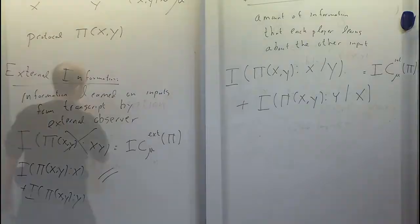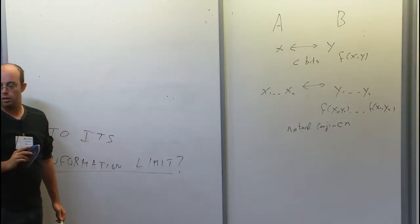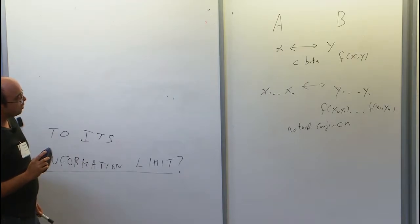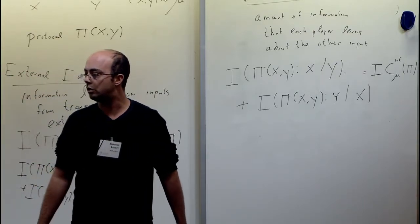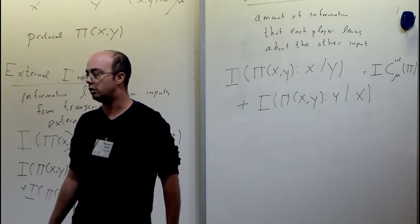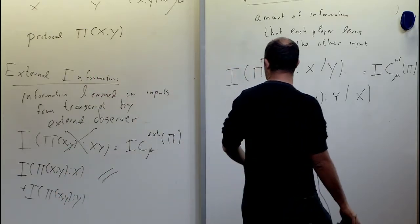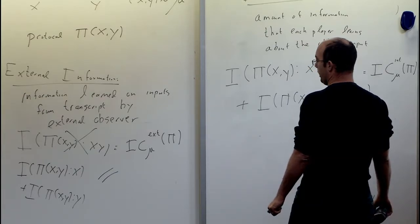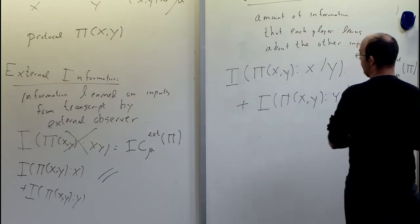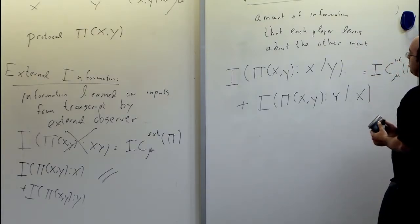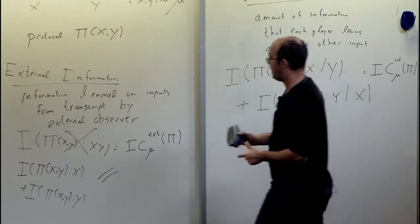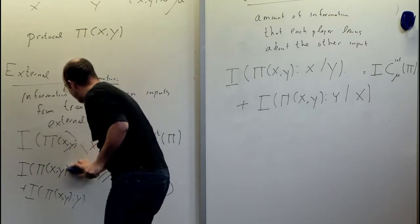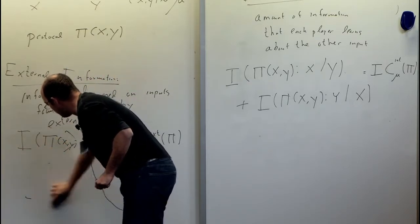An audience member raises that conditioning can increase mutual information in general. The speaker agrees the intuition is in the right direction but notes it's a subtle point. The definition is adjusted slightly — using I(π(X,Y); X) + I(π(X,Y); Y) rather than the conditional version — since these are the same up to factors of 2 anyway.